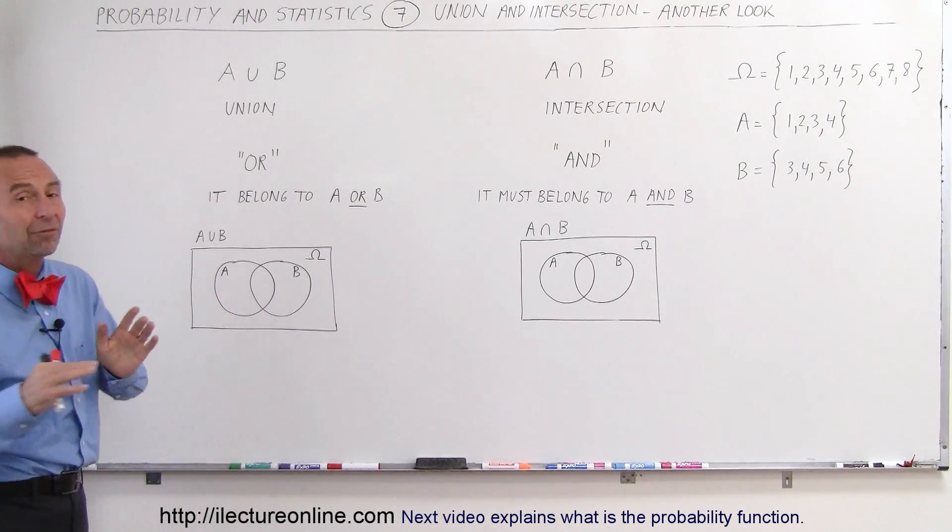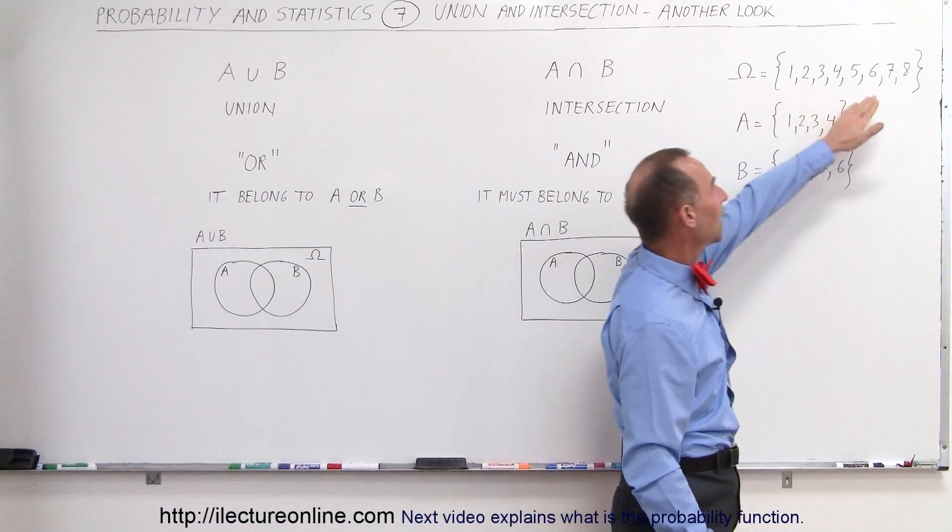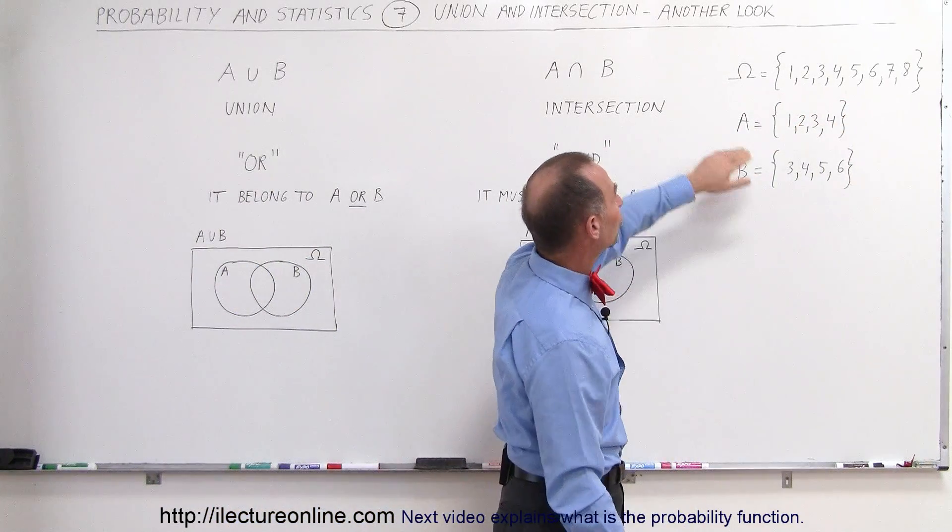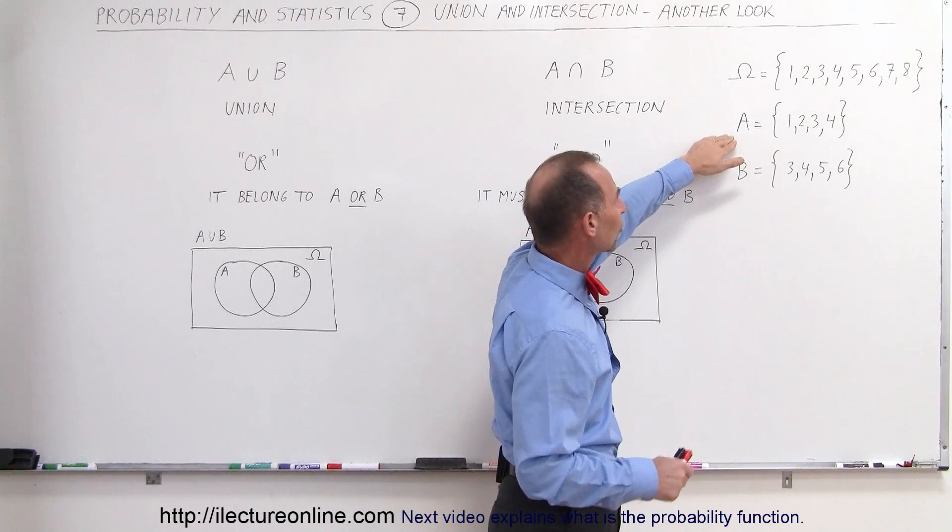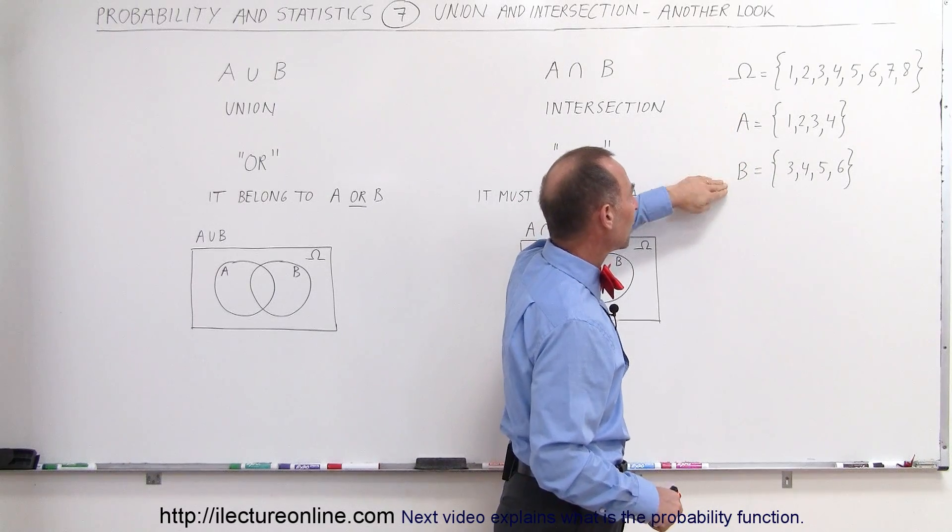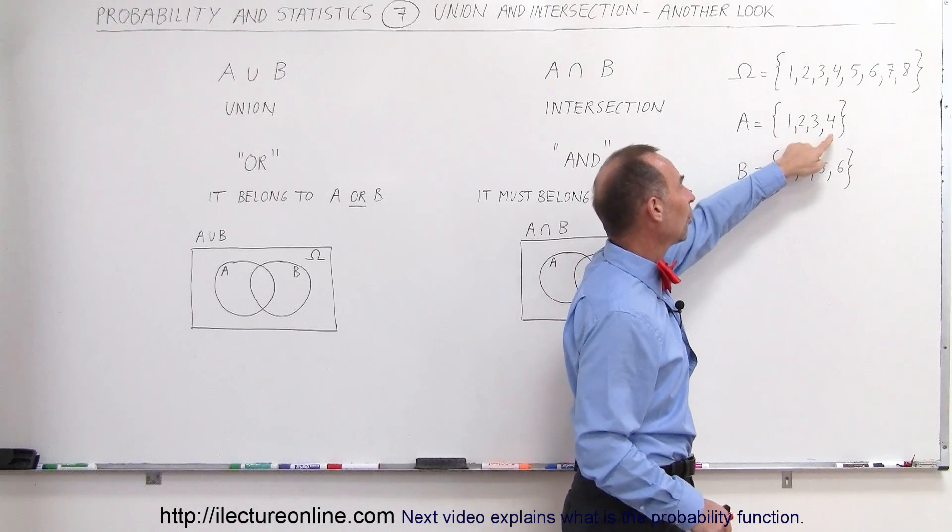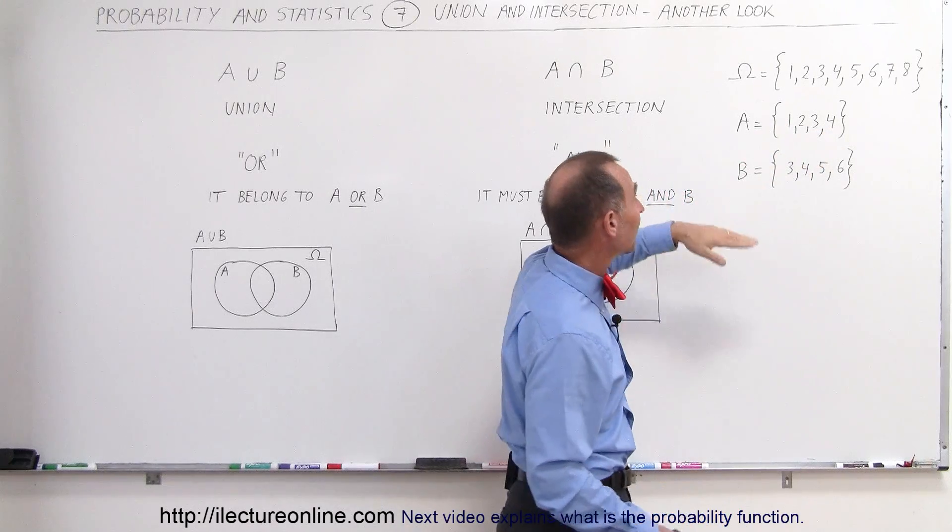All right, so now we have a sample space right here with the numbers 1 through 8, and we have two what we call events. So this is called the sample space. These are events. A, the event A has numbers 1, 2, 3, 4. These are possible outcomes for event A.